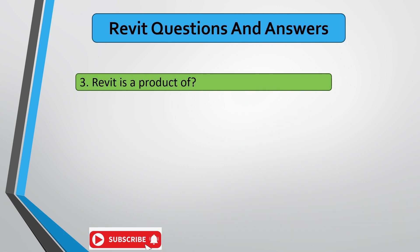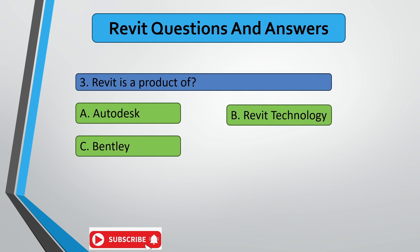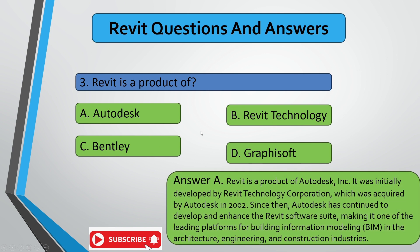The next question is: Revit is a product of which company? The correct answer is A — Revit is a product of Autodesk. It was originally developed by Revit Technology Corporation, which was acquired by Autodesk in 2002. Since then, Autodesk has continued to develop and enhance Revit, making it the leading platform for Building Information Modeling in the AEC industry.